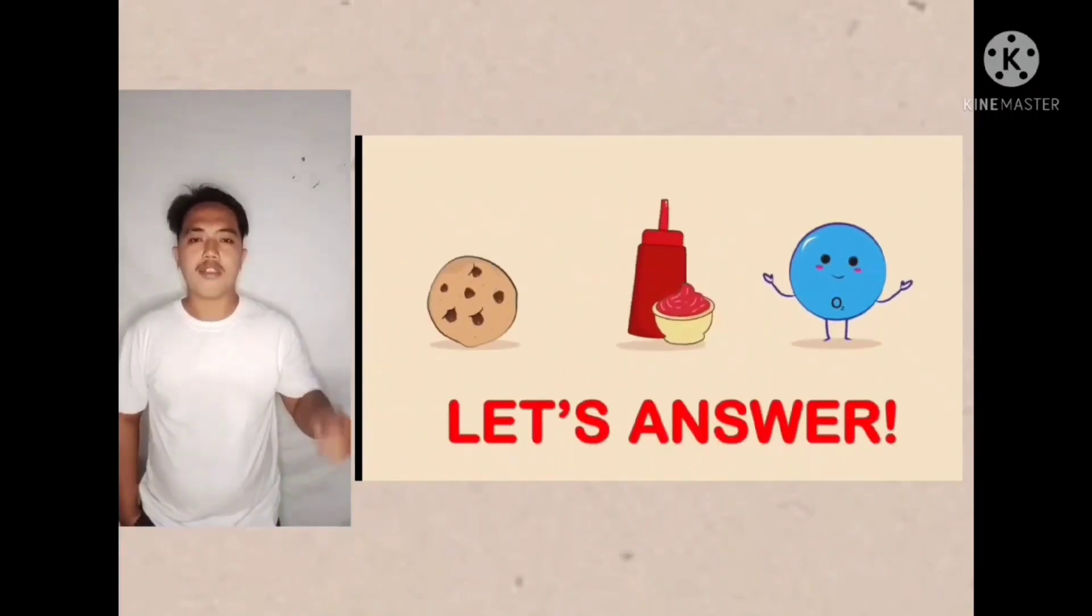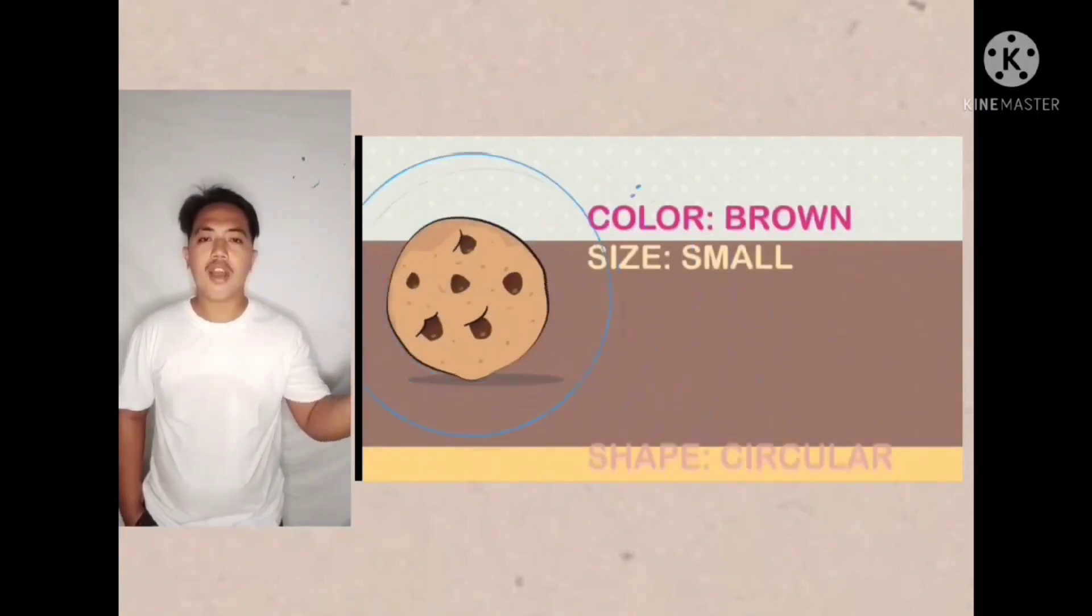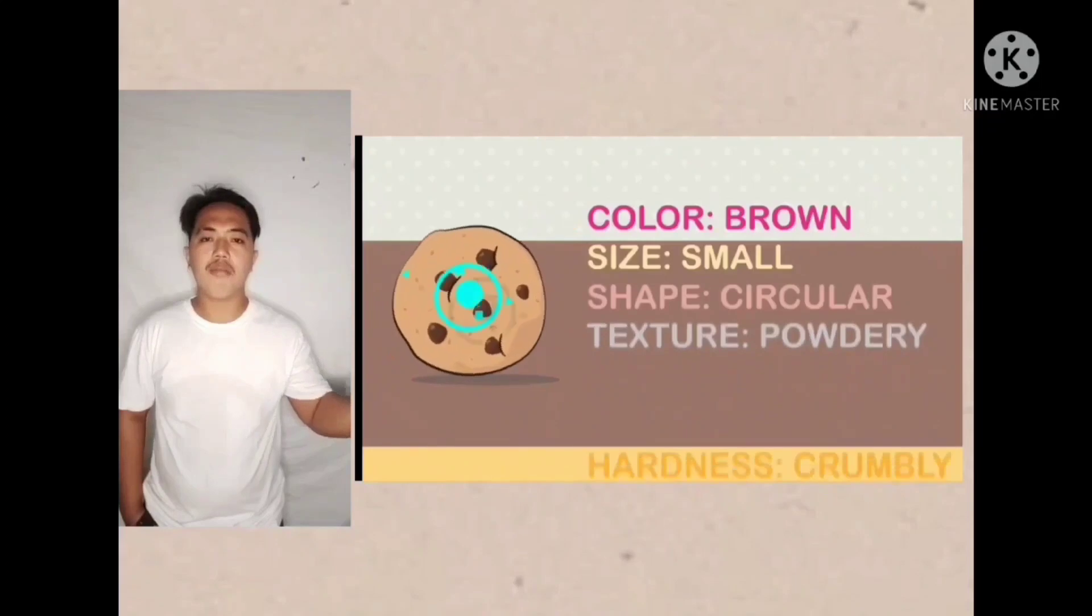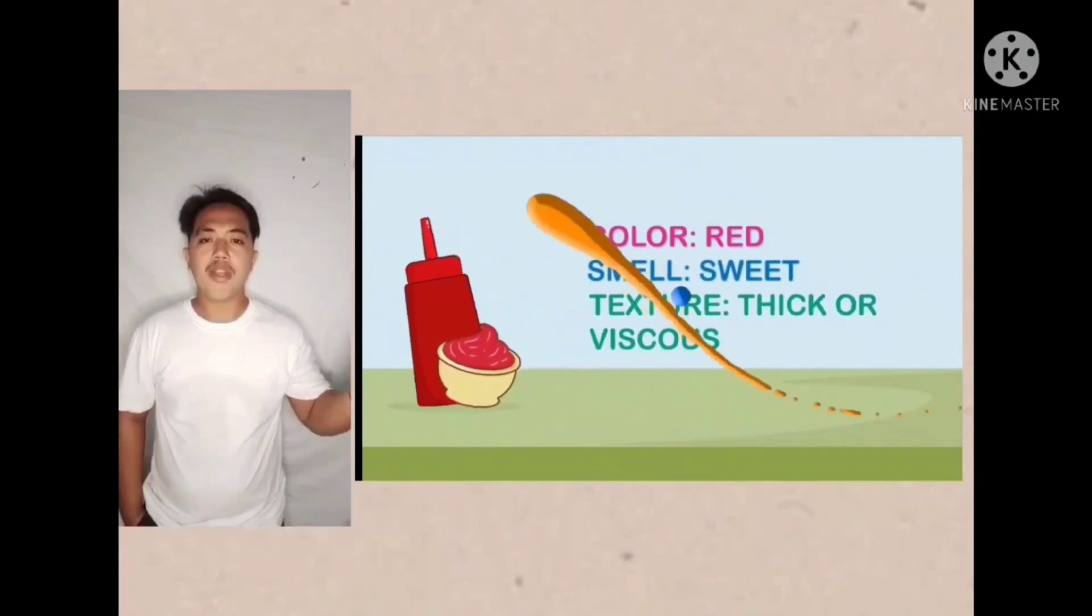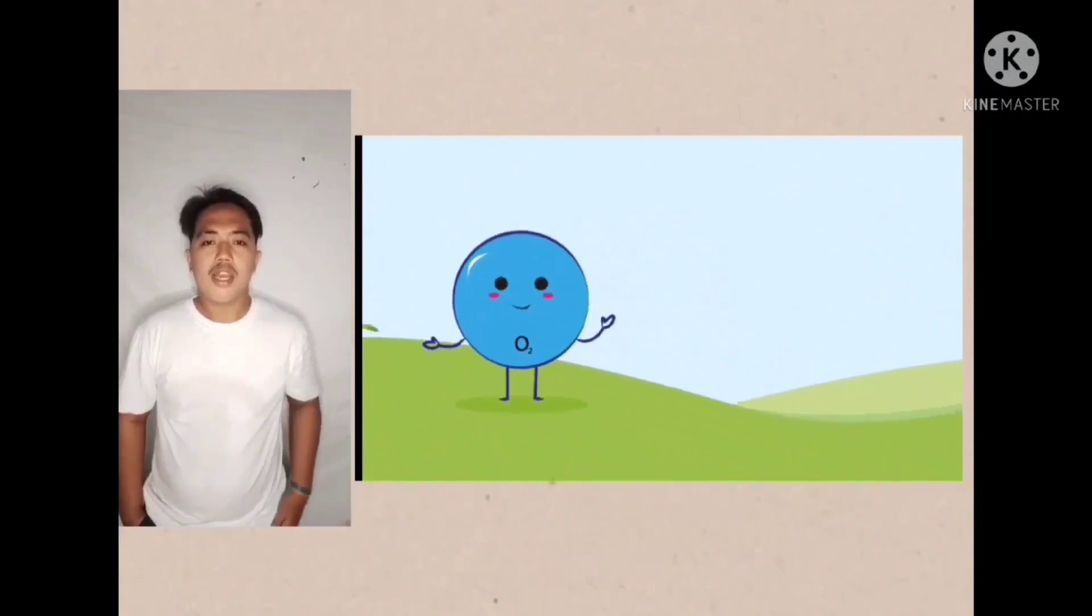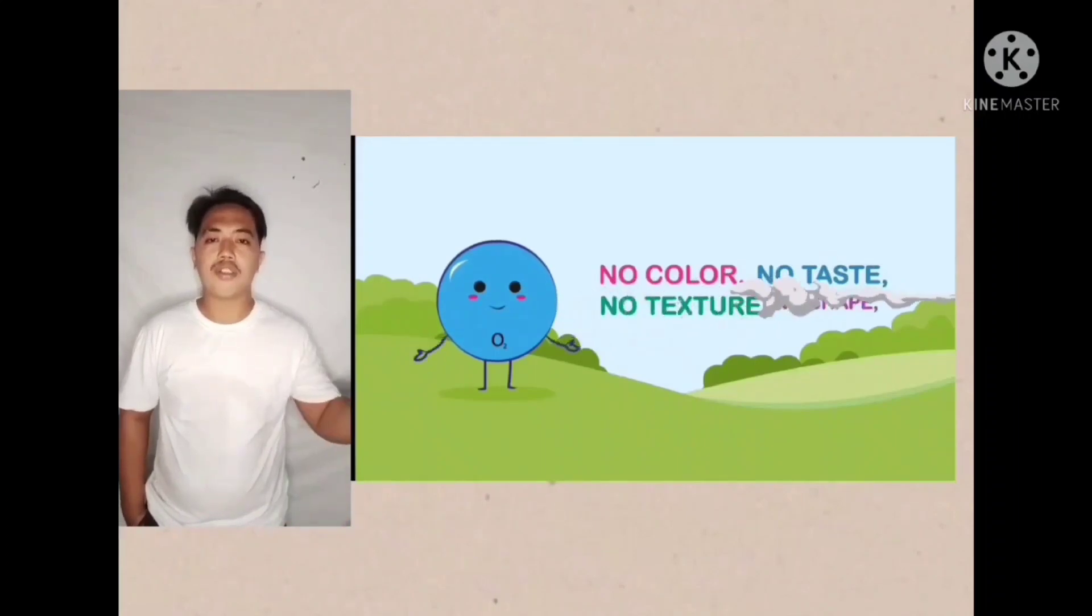Let's answer. Cookie is a solid object. It's color brown, small, circular, powdery, and crumbly. Ketchup is a liquid. It's red, it smells sweet, and thick to the touch. Oxygen is a gas we breathe. It has no color, no taste, texture, or shape.